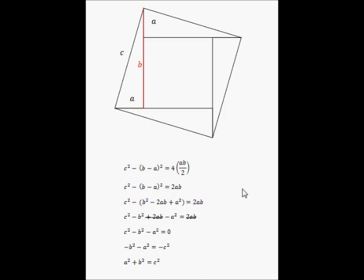So Pythagoras' theorem states that the hypotenuse along the side of a right angle triangle squared is equal to the sum of the squares of the two sides. So a squared plus b squared equals c squared.